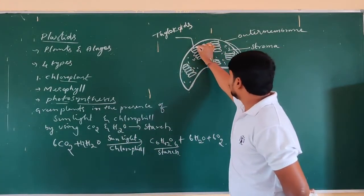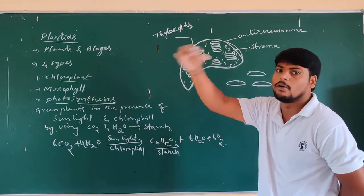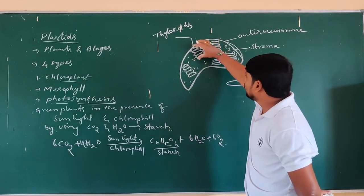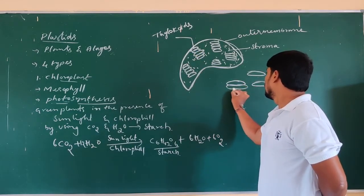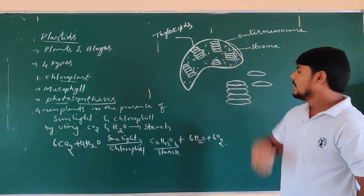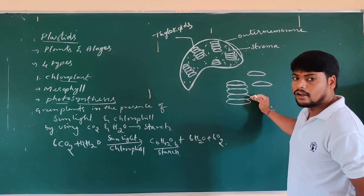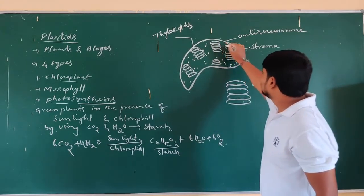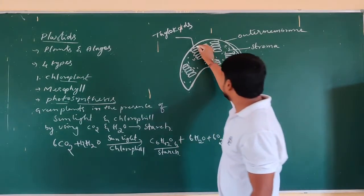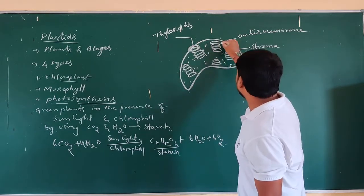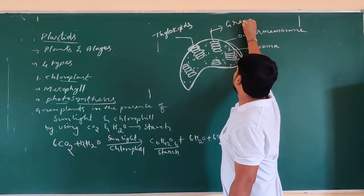These thylakoids are all arranged one above the other — just like arranging coins one above another, making a pile of coins. Here also, the pile is of thylakoids. This kind of arrangement of thylakoids, where a single sac is called a thylakoid, and all thylakoids stacked one above the other — that structure is called grana.